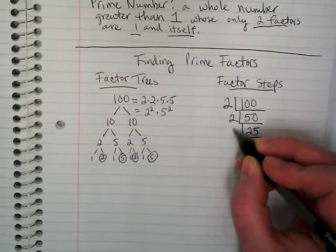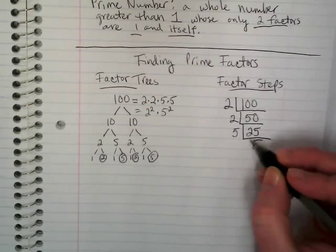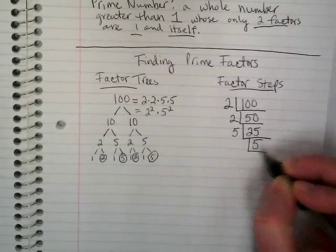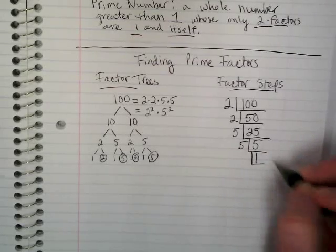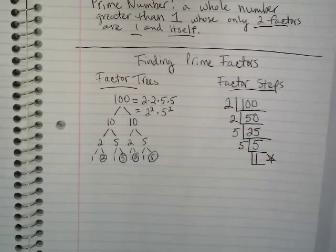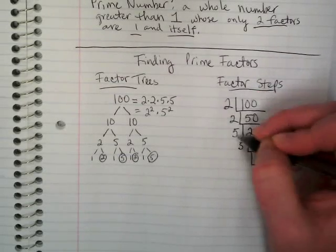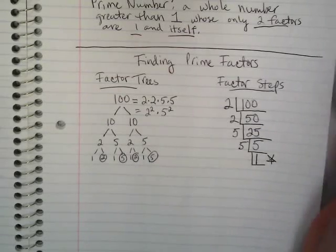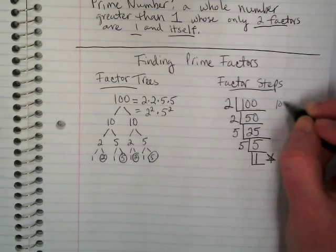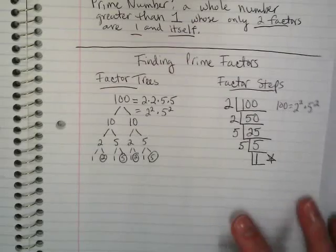25 divided by 5 gives me 5, and I can divide that by 5 again, which gives me 1. The steps are always done when you have a 1 at the bottom. Then you look at your numbers on the outside — we have two 2s and two 5s, which is the exact same thing we got with the factor tree. So we can show that 100 is equal to 2 squared times 5 squared. And that's how we find prime factors.